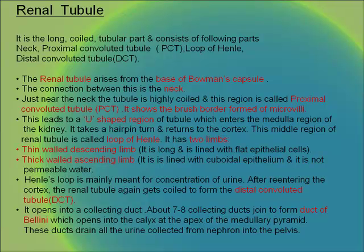The renal tubule consists of the neck, proximal convoluted tubule, loop of Henle and distal convoluted tubule, arising from the base of the Bowman's capsule. The proximal convoluted tubule is highly coiled and shows a brush border formed of microvilli. This leads to the U-shaped loop of Henle, which enters the medulla, takes a hairpin turn and returns to the cortex. The loop has a thin-walled descending limb lined with flat epithelial cells and a thick-walled ascending limb lined with cuboidal epithelium that is not permeable to water.